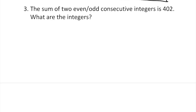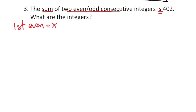The sum of two even consecutive integers. How do we find this? There is an equal sign, so first even integer is x, the second even integer is x plus two. And if you had a third, it would be x plus four. That's how you do even consecutive integers.